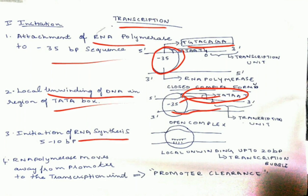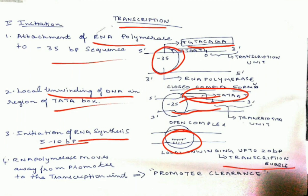The RNA is then synthesized — 5 to 10 base pairs of RNA are produced. Local unwinding of up to 20 base pairs of DNA is known as the transcription bubble. After synthesis of 5 to 10 base pairs, the RNA polymerase moves away from the promoter region to the actual region to be transcribed — this is known as promoter clearance.